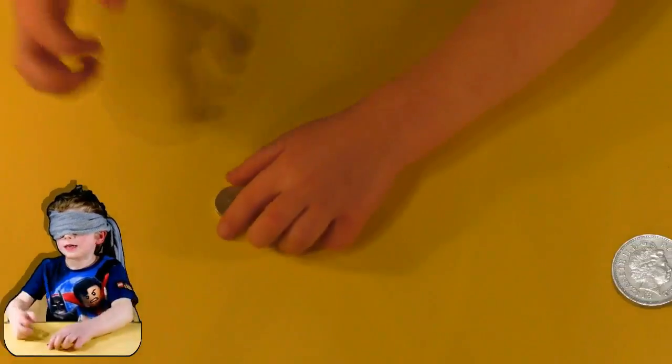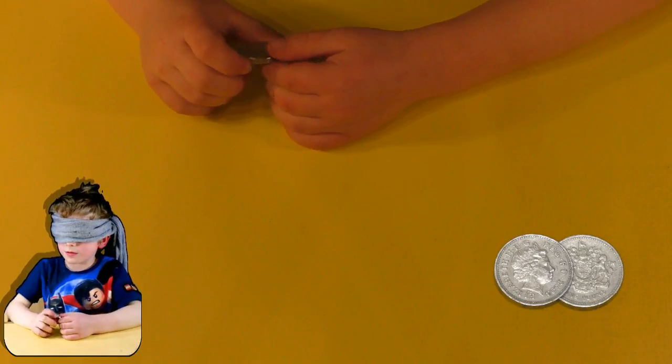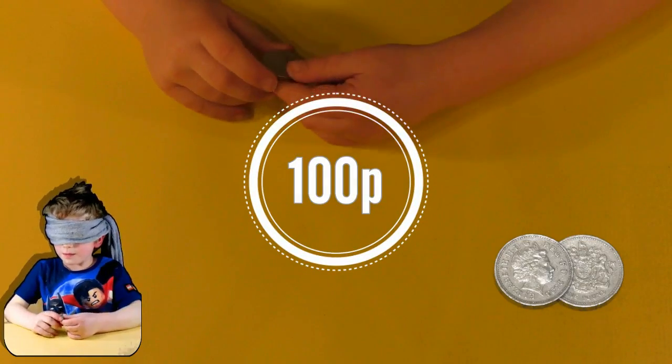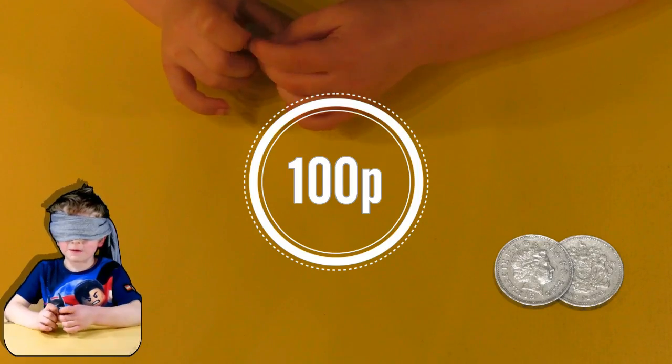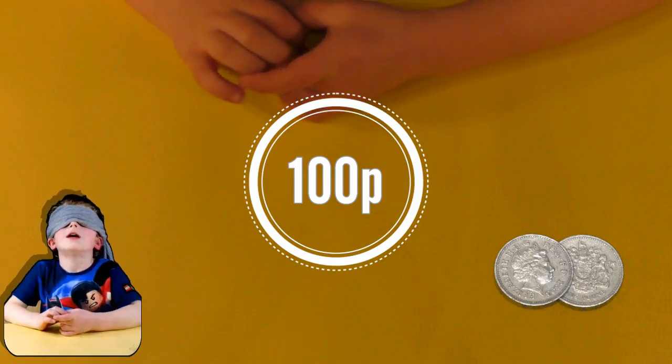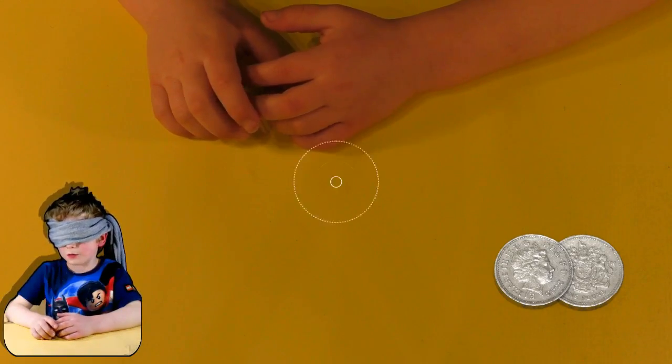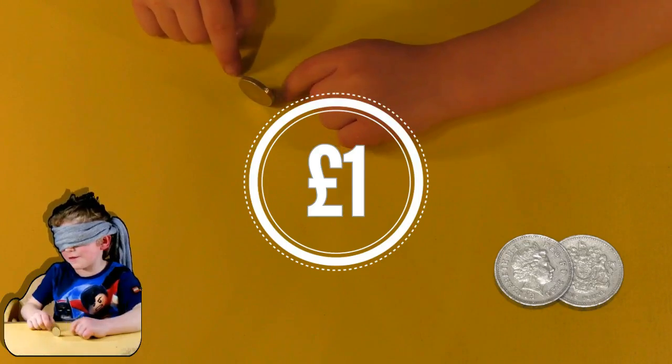And here comes another coin. In the middle, there we go. A hundred. How do you know it's a hundred? Because I feel it's round and it feels a bit fat as well. Well done. Can you remember what we call a hundred? A pound. That's it, it's a hundred, a pound. It bounces a hundred days because it's fat.